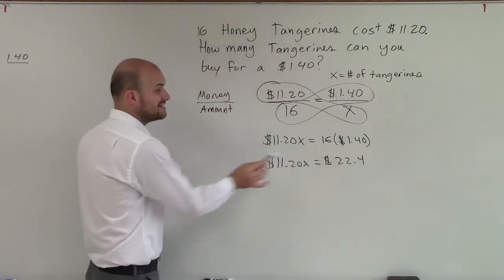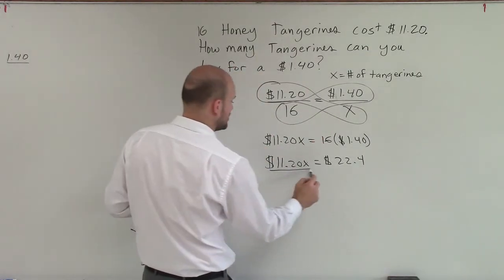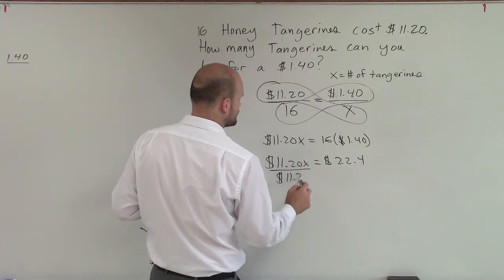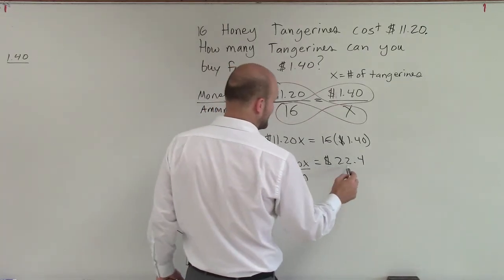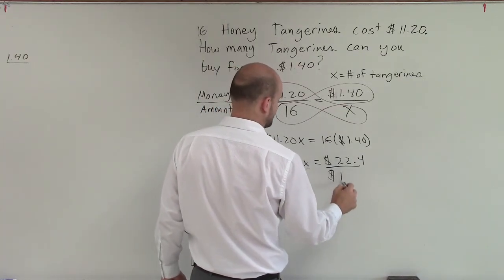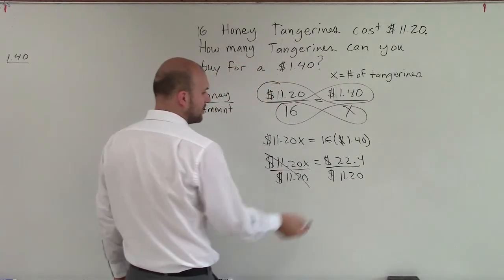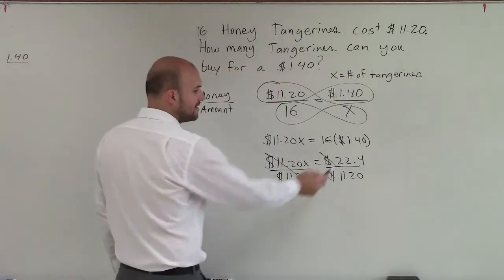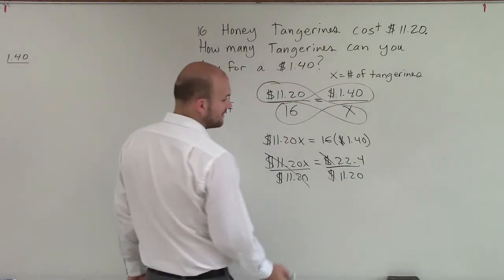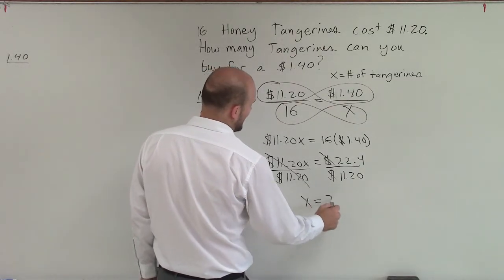OK, now I just need to solve for x, because that's our missing variable. So I'll divide by $11.20, or $11.20. All right, and then we can see that that divides out to 1. My money symbols divide out. And 22.4 divided by 11.20, we can say that x equals 2.